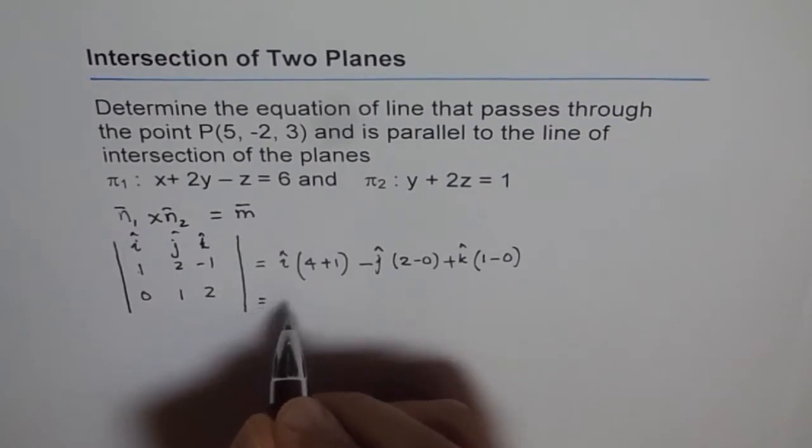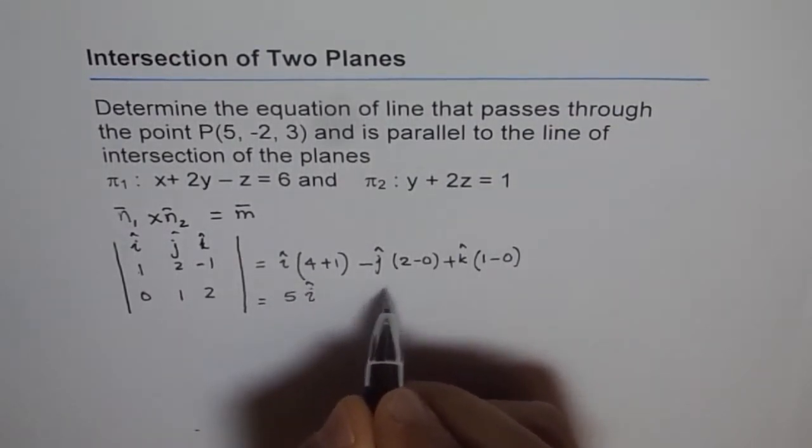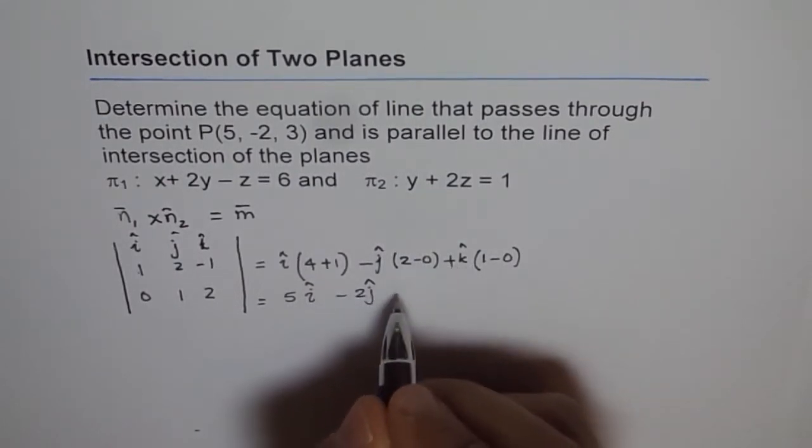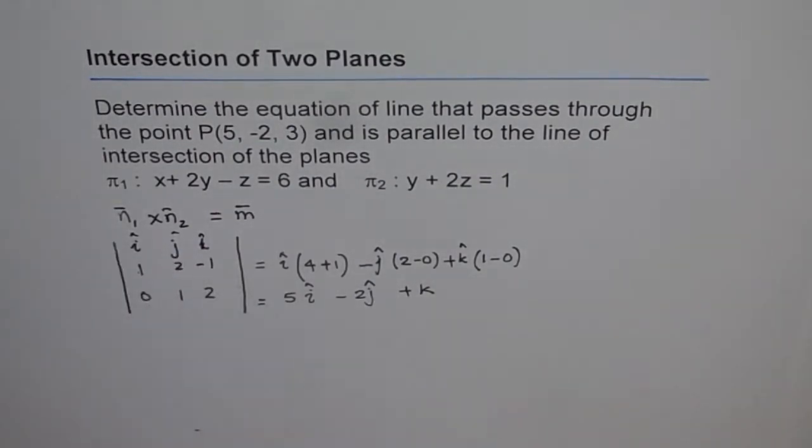And this gives us 5i, -2j, and k. So the cross product of two normals is actually the direction vector of our line of intersection.